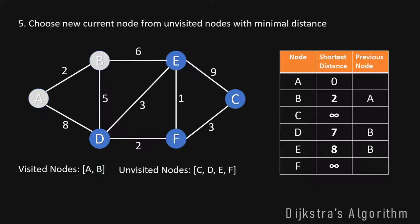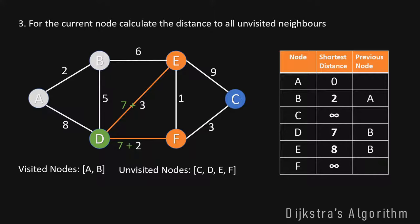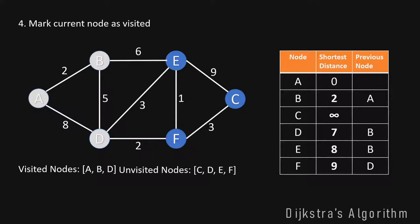We choose the next node with minimal distance from all unvisited nodes — that is D, with a distance of 7. We calculate distances to all unvisited neighbors of D, adding 7 to each edge weight. For E: the distance from A to E over D is 10 (7 plus 3), which is not less than our current value of 8, so we don't update E. For F: the current distance is infinity, but we get a distance of 9 from A to F over D, so we update F's shortest distance to 9 with previous node D. We mark D as visited.